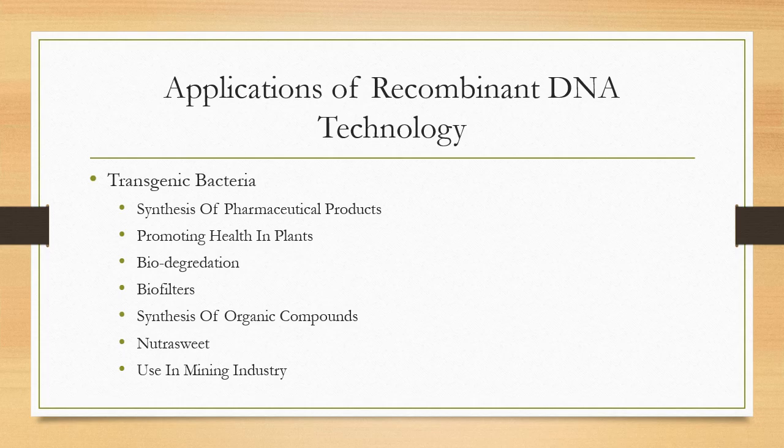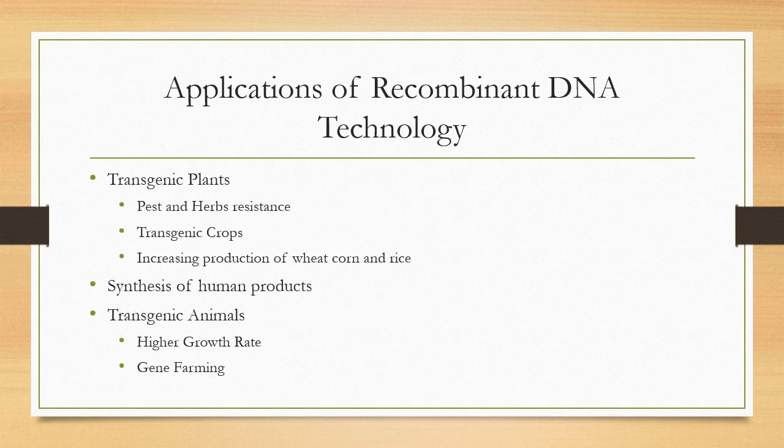Another use of transgenic bacteria is in the mining industry. Major mining companies are using bacteria to obtain various metals. Genetic engineering enhances the ability of bacteria to extract copper, uranium, and coal from low-grade sources. Bacteria have the natural ability to form bonds with certain metals, and this ability can be enhanced by genetic engineering so we can obtain valuable metals using this technology.